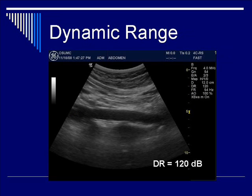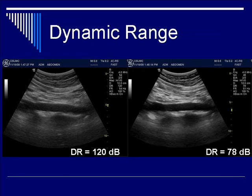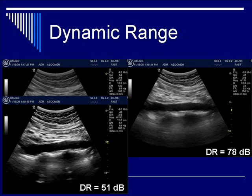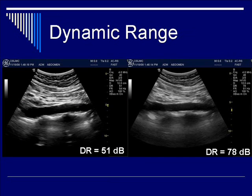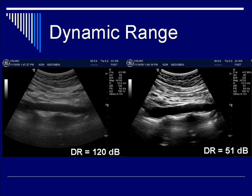Let's look at some examples. At a dynamic range of 120 dB, notice the wide range and huge gradation of grayscale. At a somewhat lower dynamic range of 78 dB, there is less gradation of gray and a little better contrast. At an even lower dynamic range of 51 dB, you have an even more black-and-white, higher-contrast picture with less grayscale gradation. Comparing 120 to 51 dB, it becomes clear that higher dynamic range gives you more shades of gray, but lower dynamic range gives you better contrast.